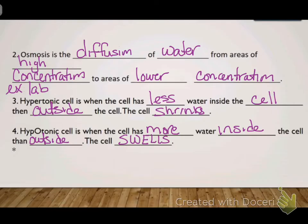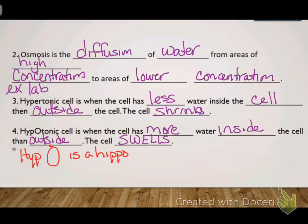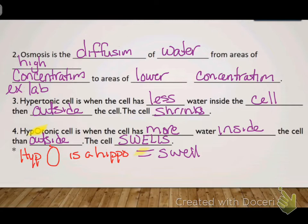What happens is water passes through the cell membrane. On your fun sheet I made the 'O' in hypo larger or capitalized to help you differentiate between hyper and hypo. I always say hypo is a hippo, and hippos are swell — so you can think 'swell' like it's big, because it's a hippo and it's big.